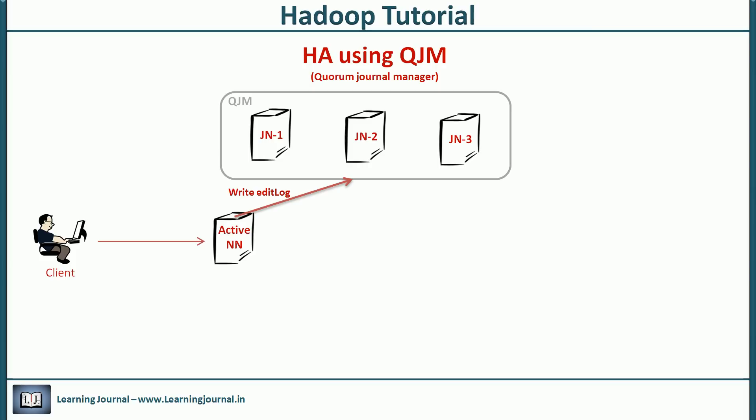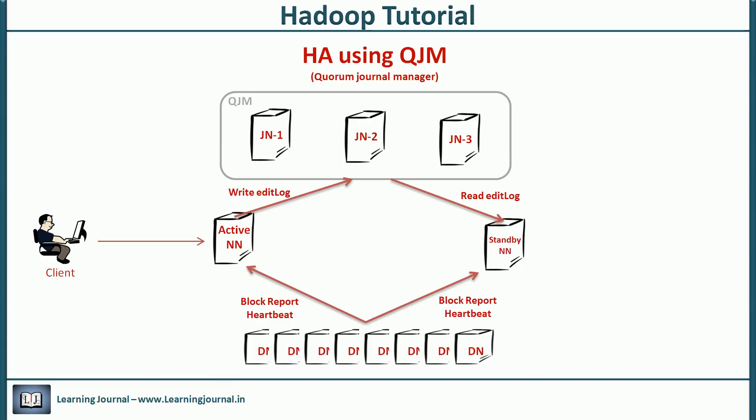Let's move to standby name node. So we add a new machine to the cluster and make it a standby name node. We also configure it to keep reading the edit log from the QJM and keep itself updated. This configuration makes standby ready to take up the active name node role in just a few seconds. There are two other important things in an active standby configuration. All the data nodes are configured to send the block report to both of the name nodes.